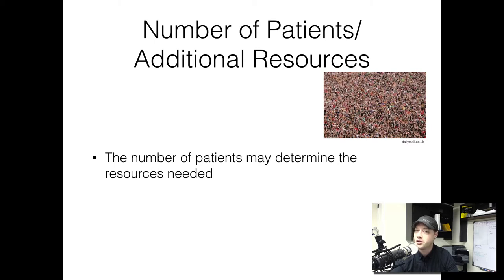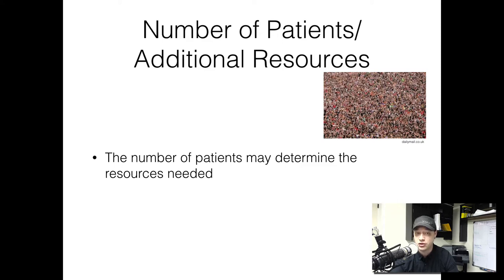Determining the number of patients might not be as easy as you may think. Generally, we walk into a scene and see one patient — that's our patient. But from time to time you have to consider that you might have two different patients. This especially applies to cardiac arrest, where you have the patient in cardiac arrest and then the family around them who may become patients as well.